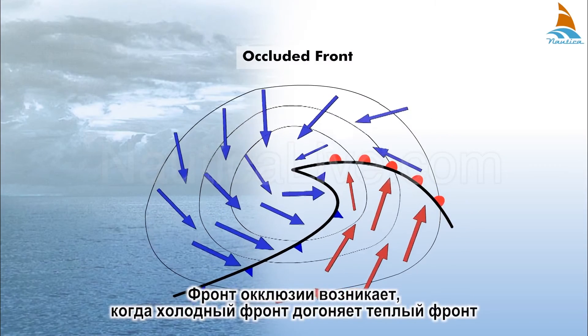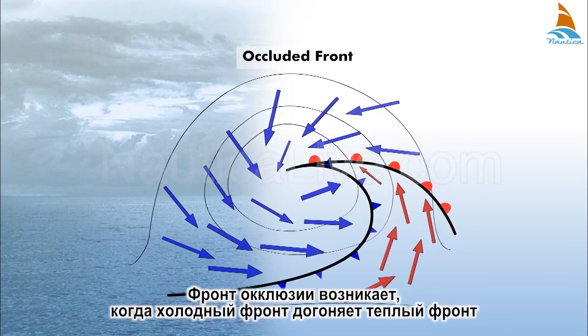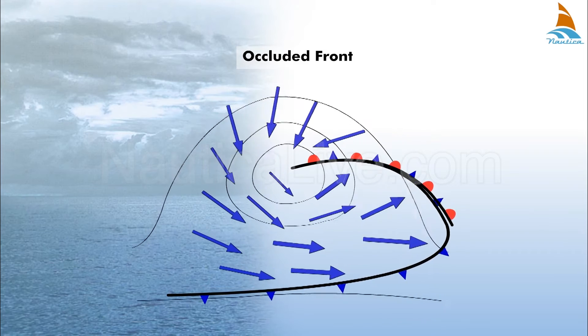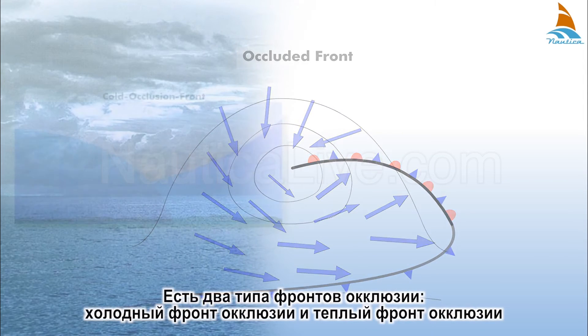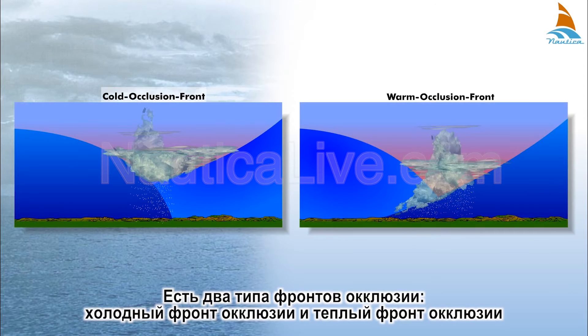An occluded front occurs when a cold front catches a warm front. There are two types of occluded fronts: the cold occlusion front and the warm occlusion front.